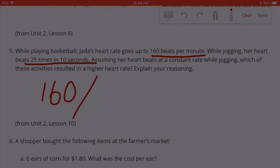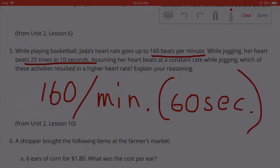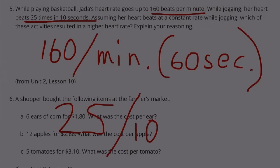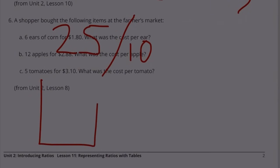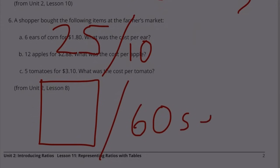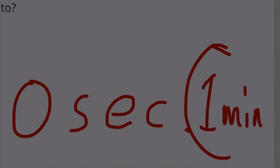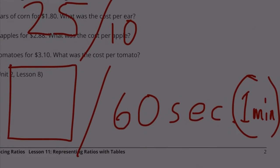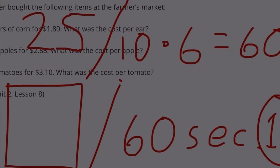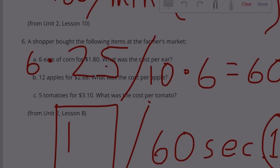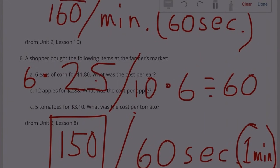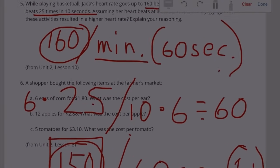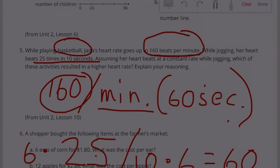160 beats per minute — that's the same as 60 seconds, so 160 beats in 60 seconds. Jogging: 25 beats in 10 seconds. Let's convert 10 seconds to 60 seconds. 10 times 6 equals 60, so we multiply 25 times 6, which equals 150. Comparing: 160 beats per minute versus 150 beats per minute. Her heart rate is higher when she's playing basketball.